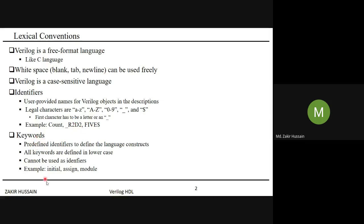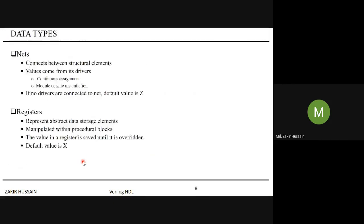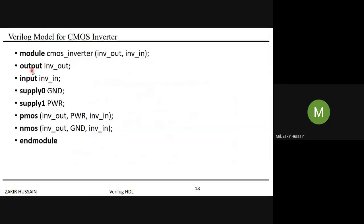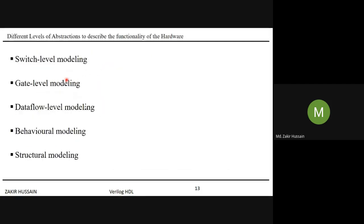Predefined identifiers in Verilog are the keywords. As Verilog is case-sensitive, all keywords are defined in lowercase and cannot be used as identifiers. For example, 'output' is a keyword — you cannot use it as a user-defined identifier. Keywords like 'cmos', 'output', etc., are reserved and cannot be repurposed. User-defined identifiers must avoid all reserved keywords.